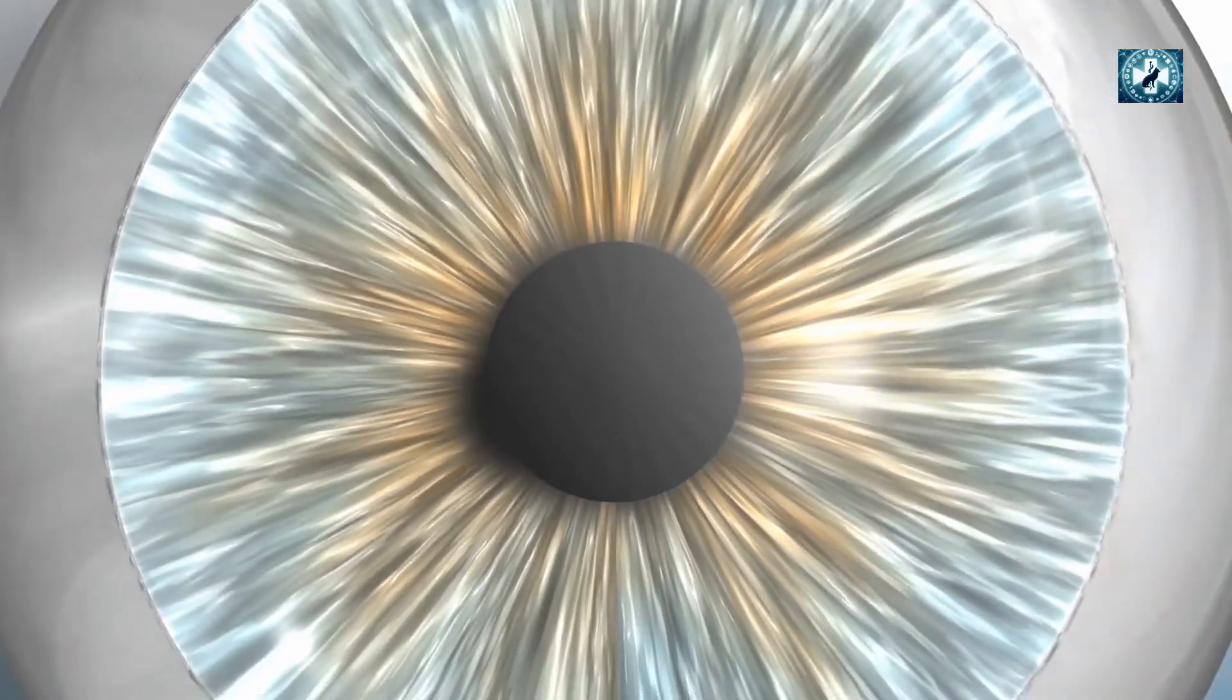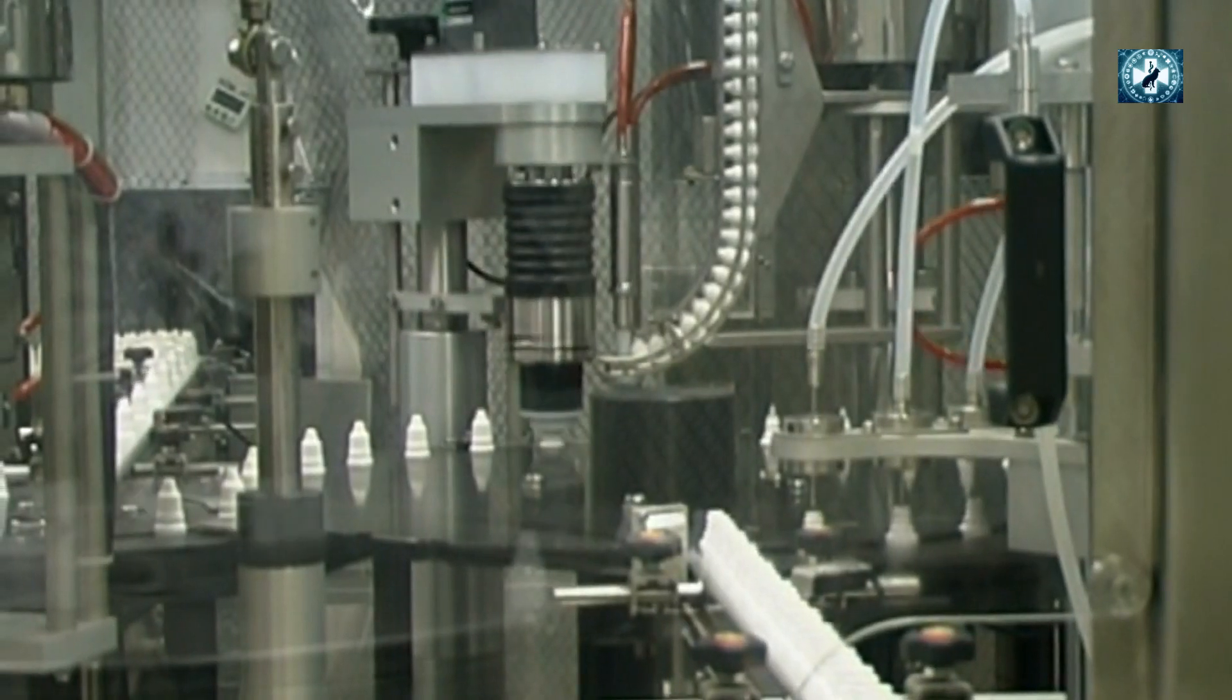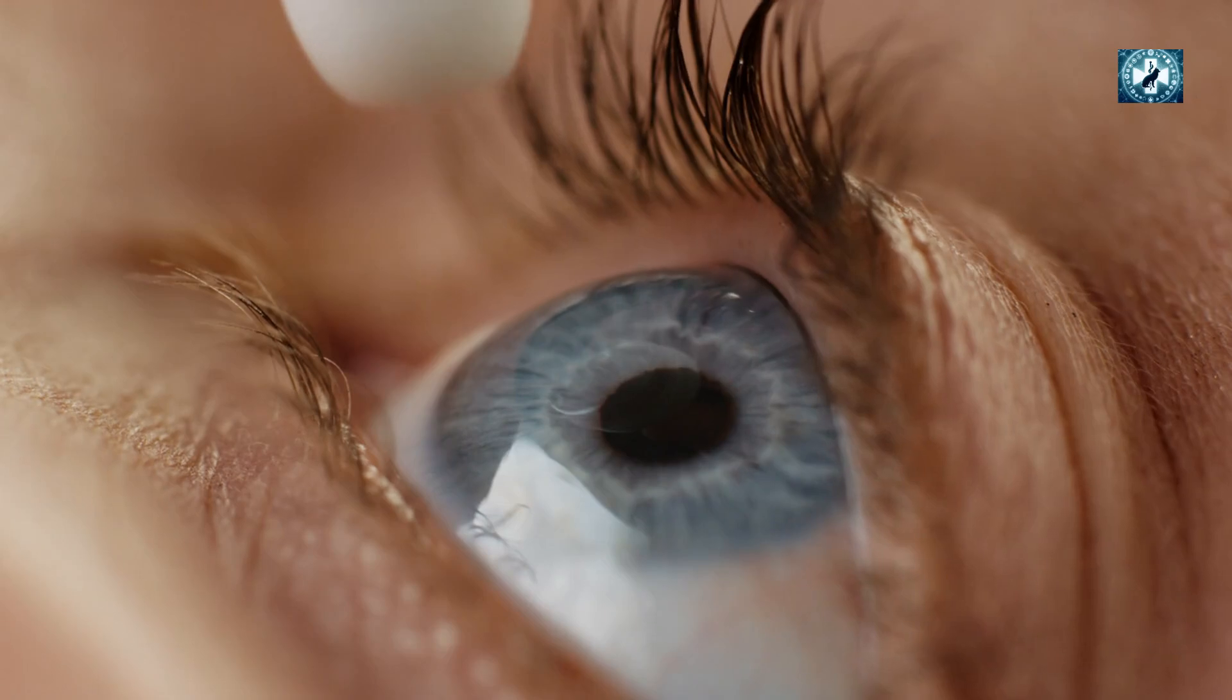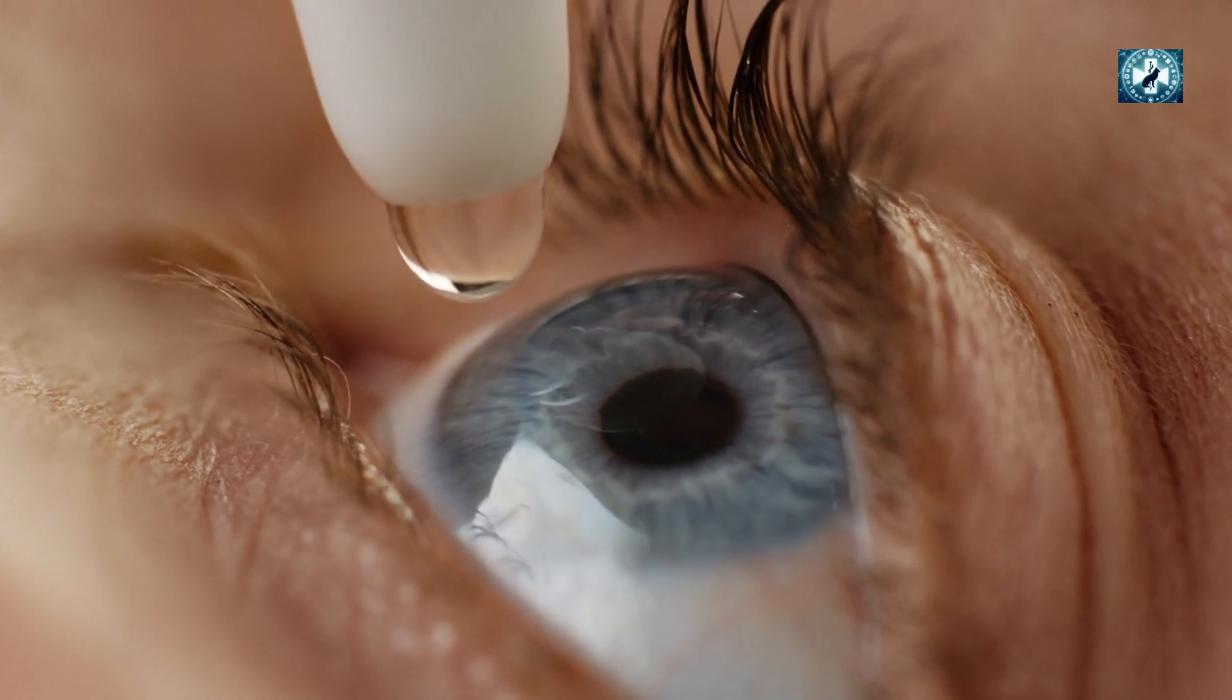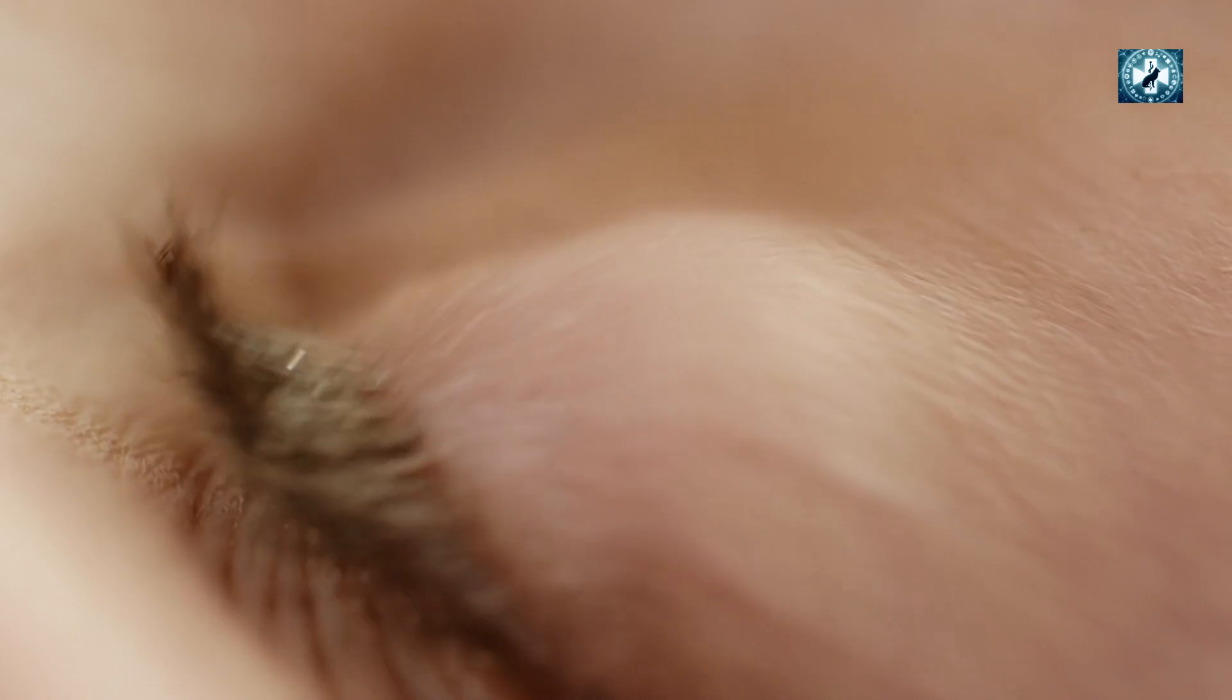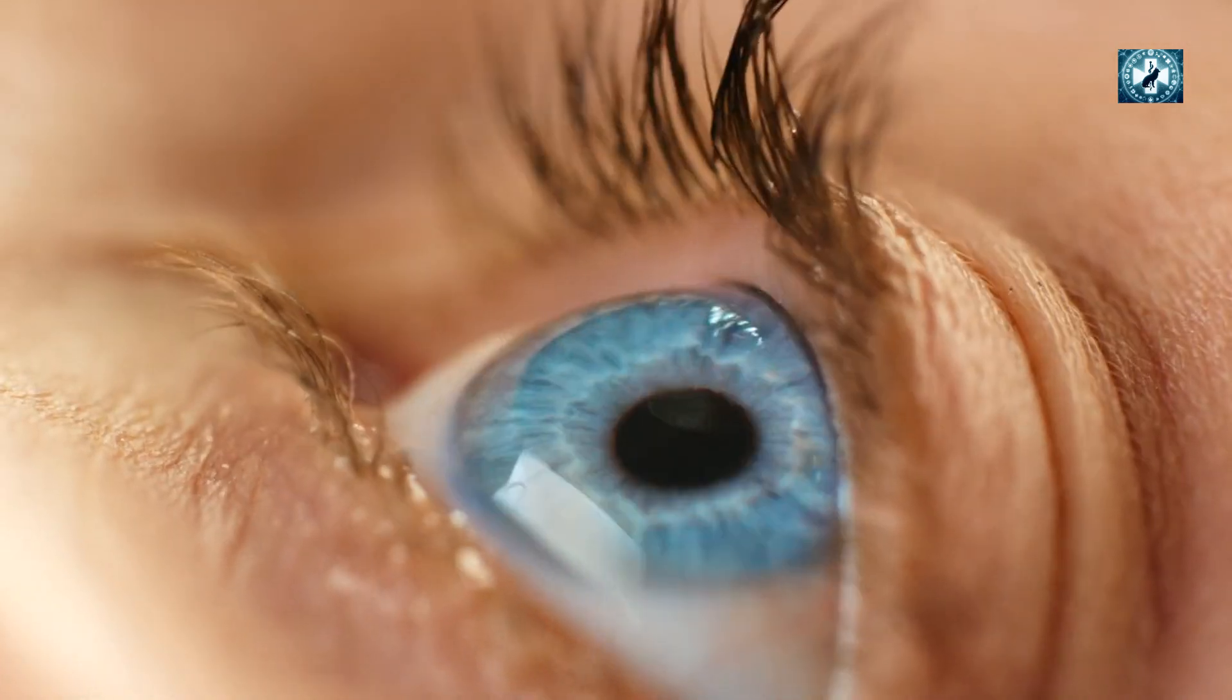These eye drops are designed to penetrate the cornea and reach the lens, where they can potentially reverse or halt the progression of cataracts. The development of NAC eye drops dates back to research conducted in the late 20th century. Initial studies and anecdotal reports suggested that they could improve vision clarity and reduce the opacity of cataracts.